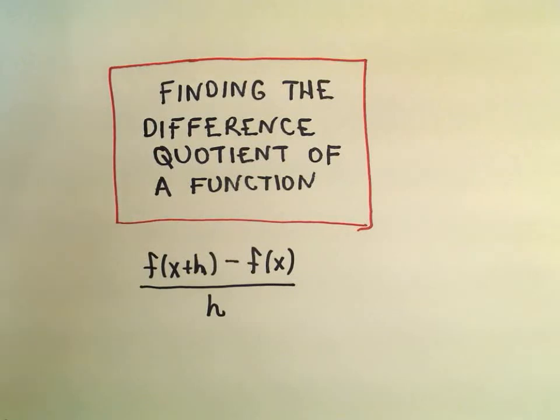Alright, in this video we're going to do a couple examples related to finding the difference quotient of a function. The idea is if you have some function f, the difference quotient is the quantity f(x+h) minus f(x) over h.